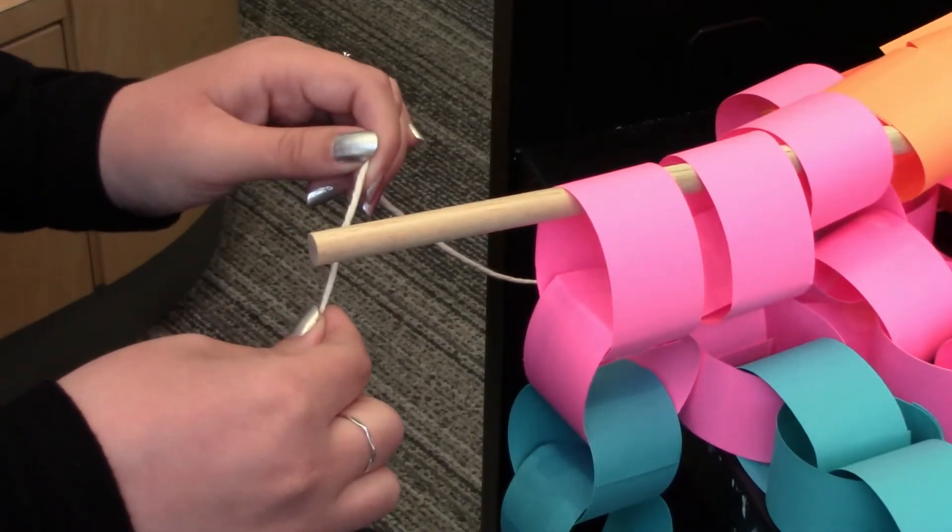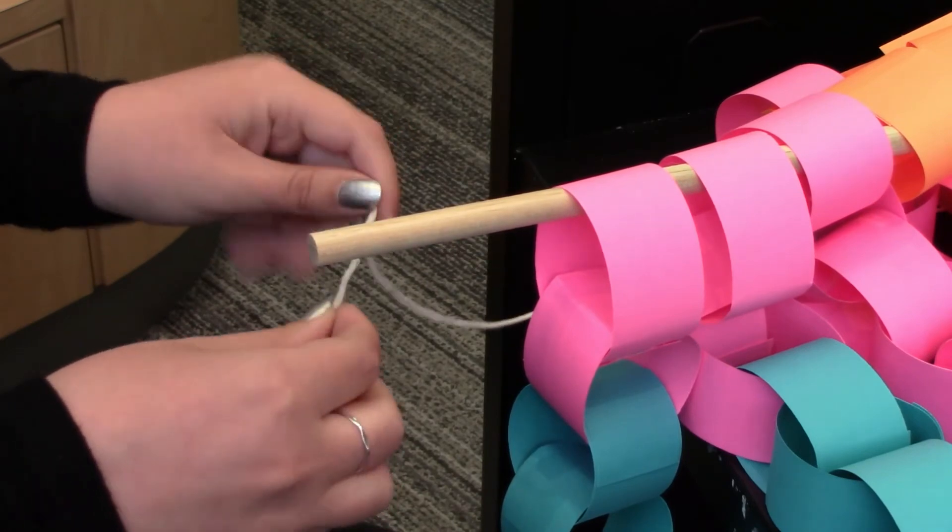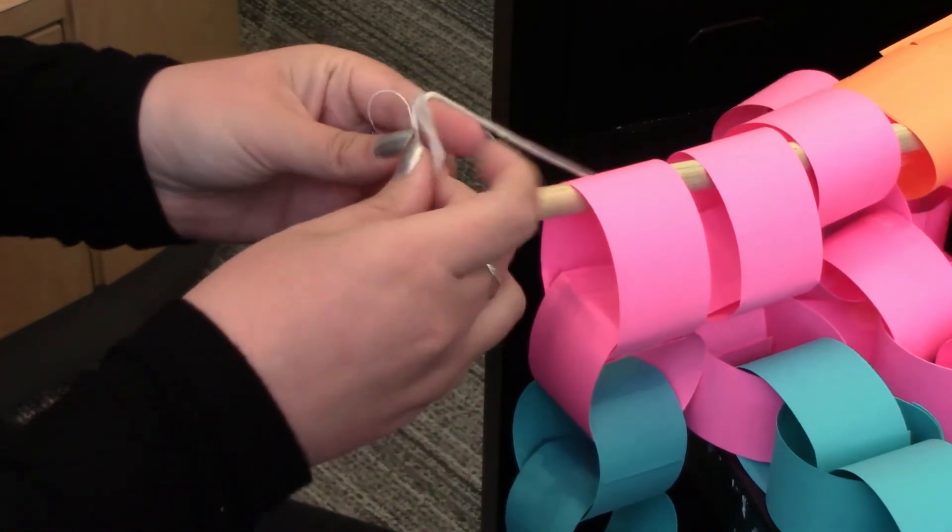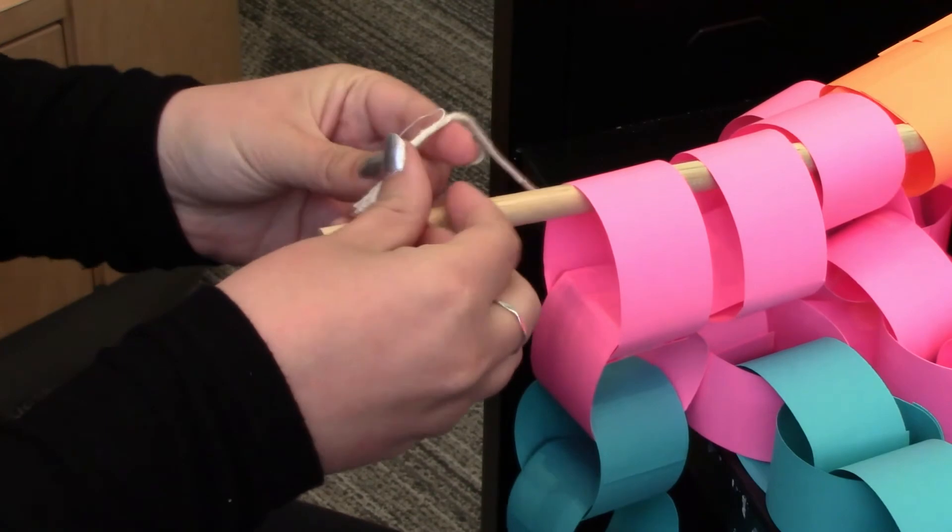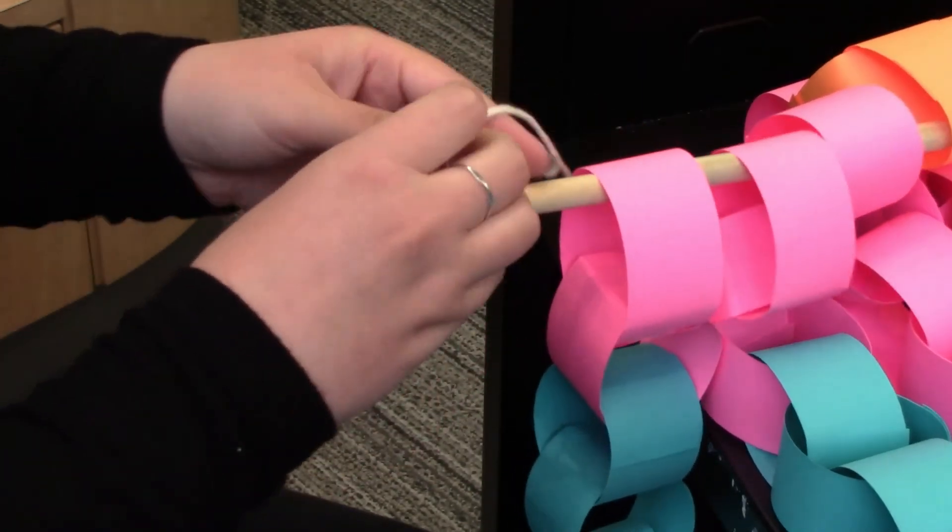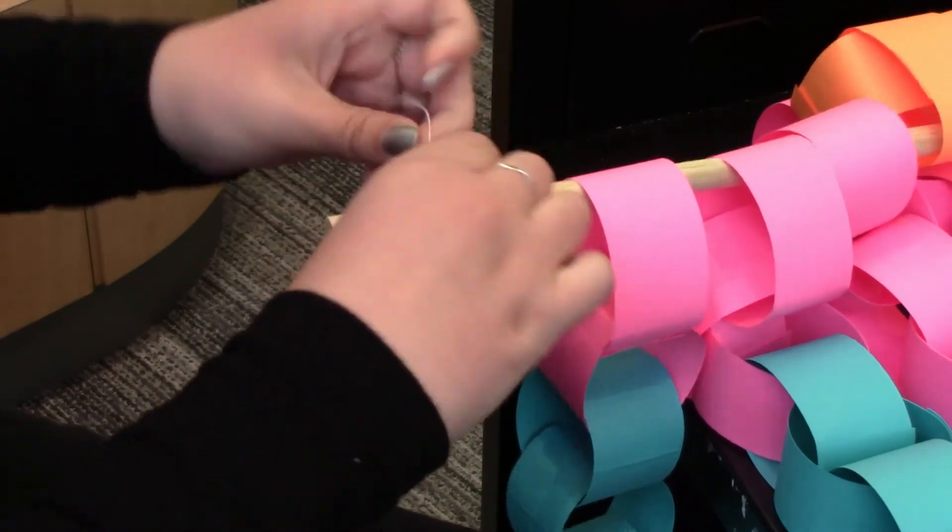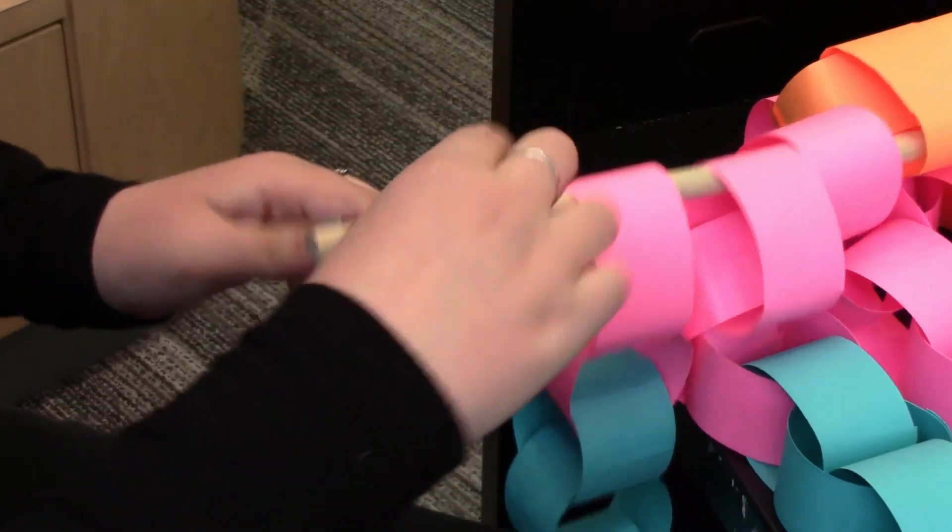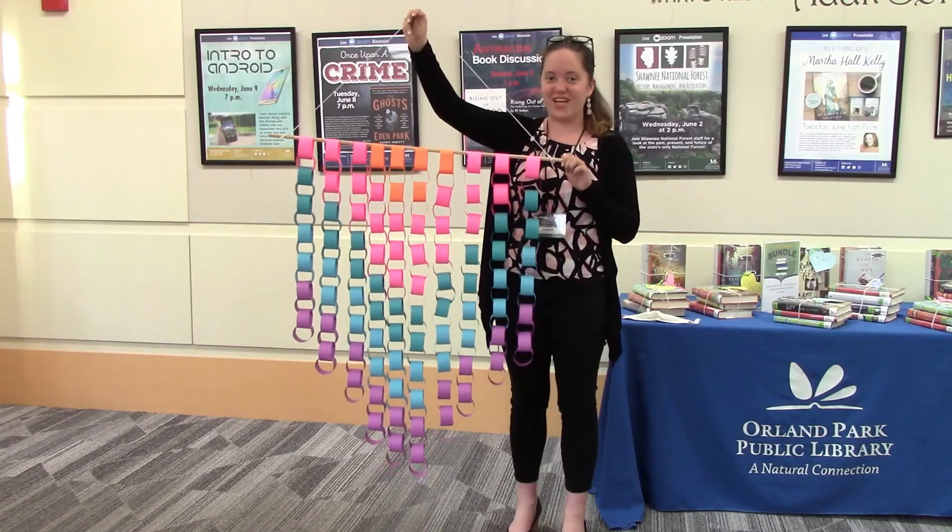Once you've finished adding all of the paper chains onto the wooden stick, tie your rope around each end. Your tapestry is complete.